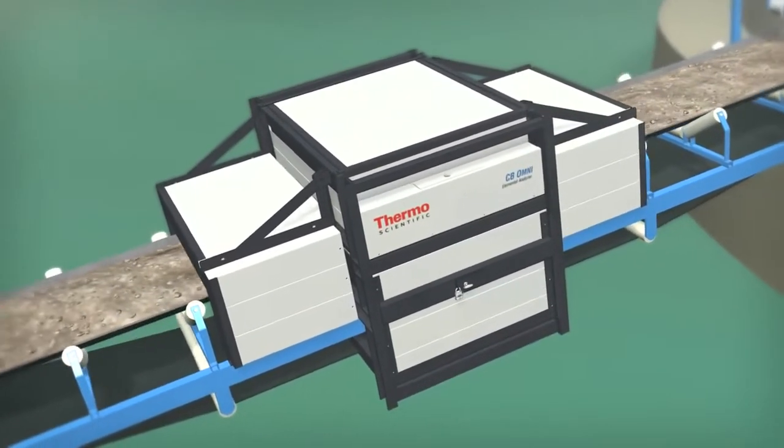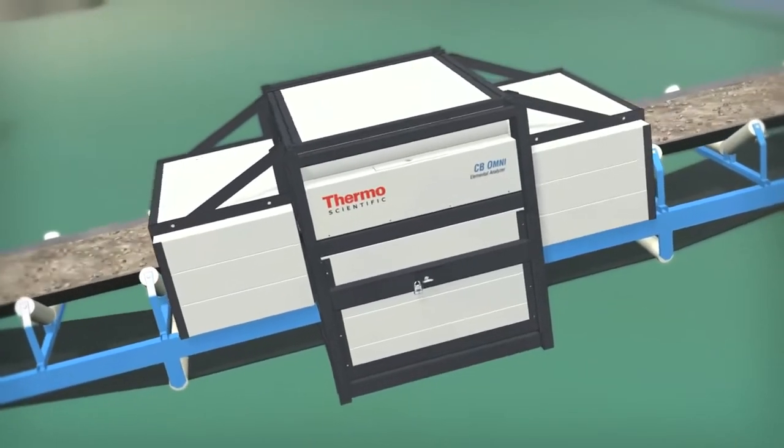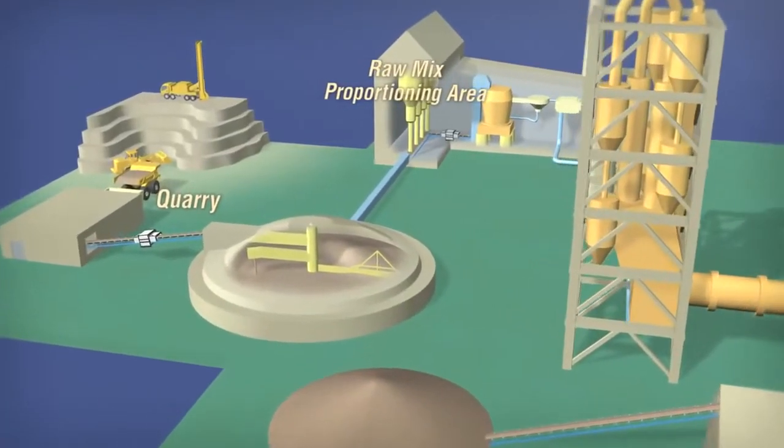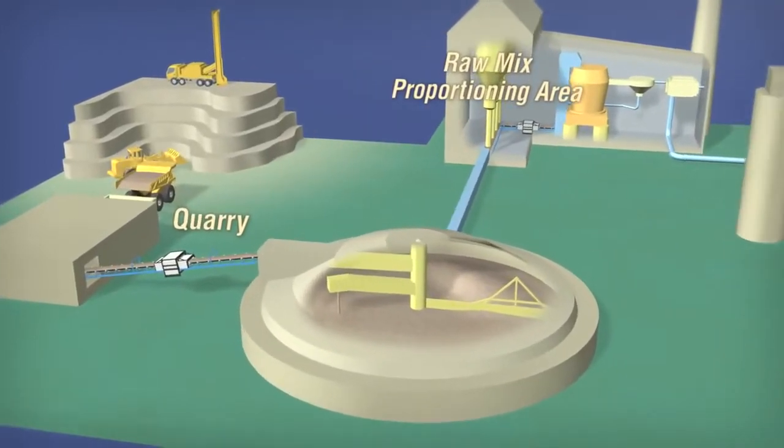Thermo Scientific CB Omni brings efficiency to cement production, predominantly at two locations within the plant, the quarry and the raw mix proportioning area.